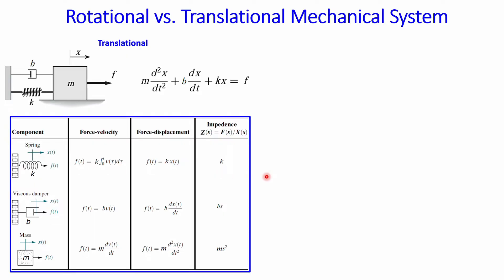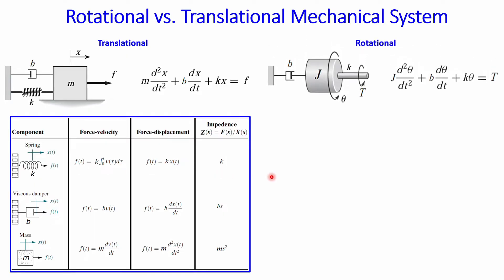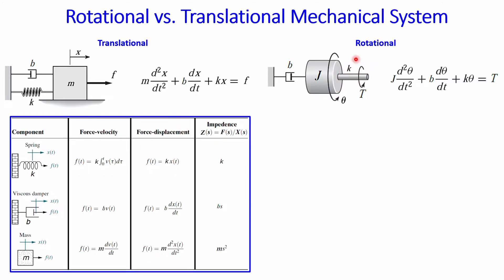For the rotational mechanical system, the form is very similar. Instead of mass m, we use the moment of inertia J. The damping coefficient b and spring constant k are still present, but with different units. The applied input is not force but torque, and the response is the angular displacement given by theta.